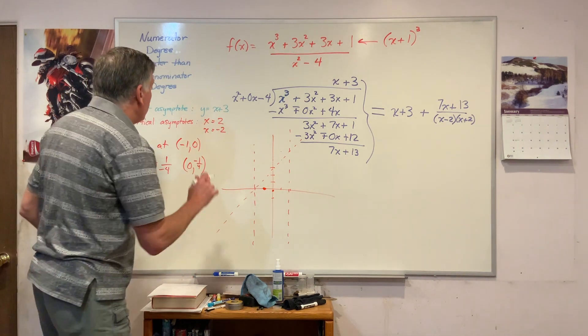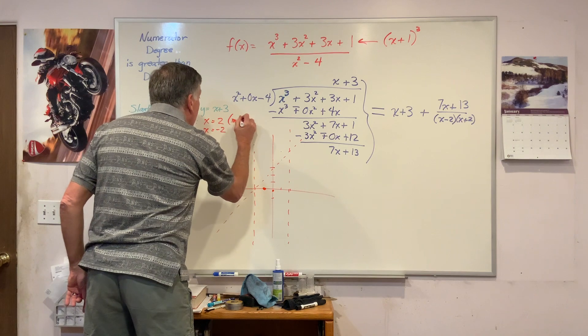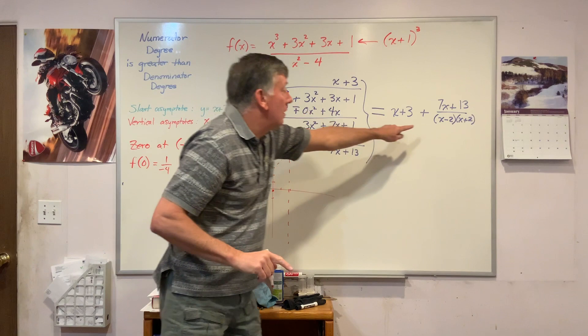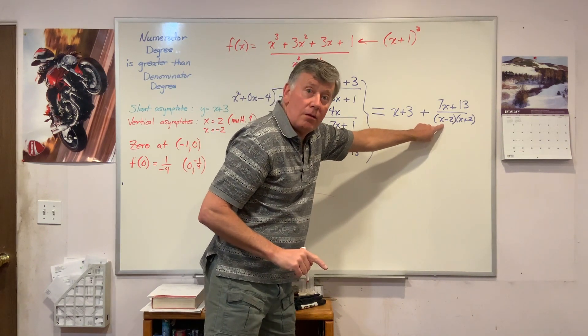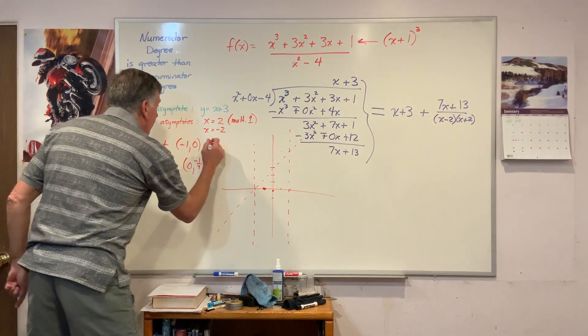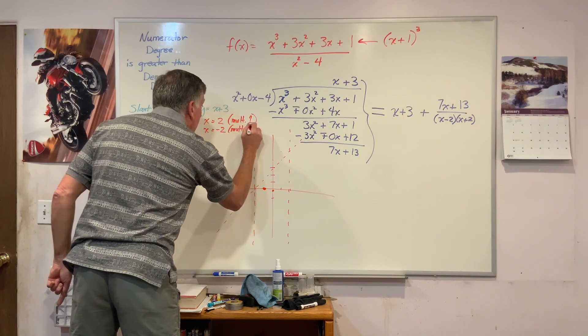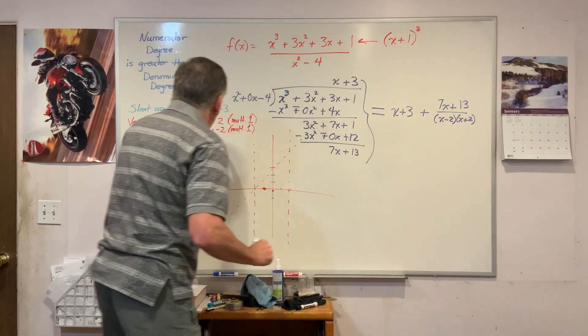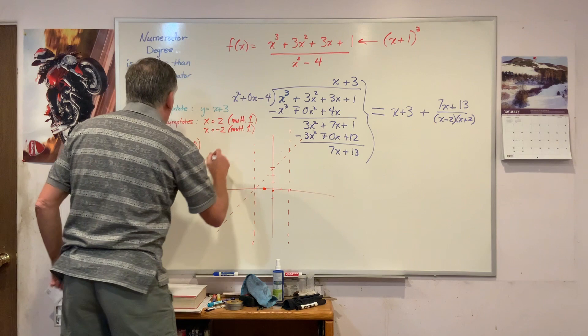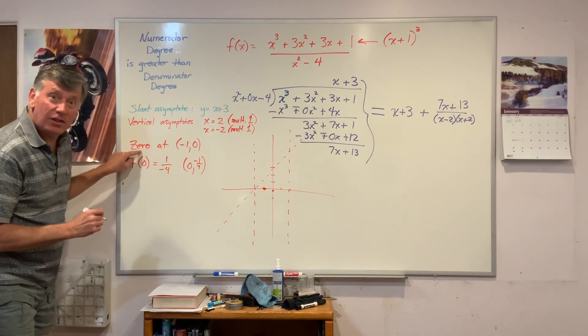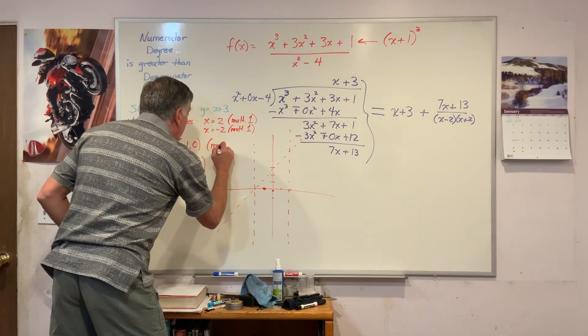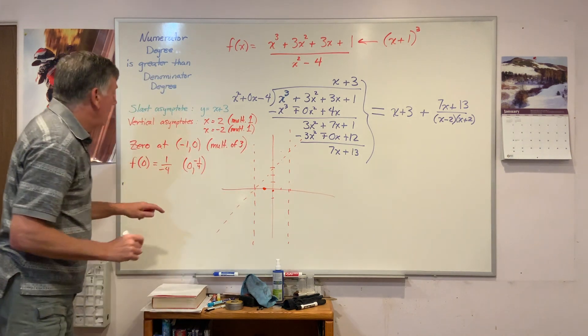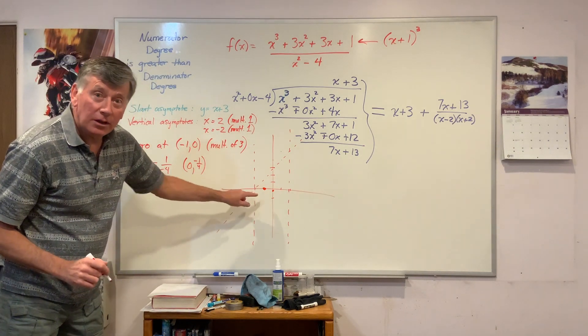One more thing I want to point out, because of the multiplicity, I have a multiplicity of 1 here for this factor. I have a multiplicity of 3 for this 0, but it's still odd, which means that it's going to cross through. It will not bounce.